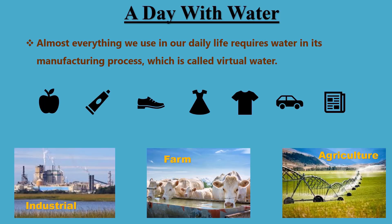At the same time, everything we use also requires water in its manufacturing process. This is called virtual water — water used in the production of goods and services we use. For example, a dress that we wear requires water for fabric production, and an apple tree needs lots of water to give you an apple.